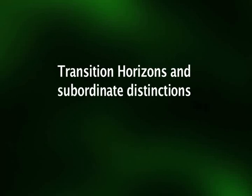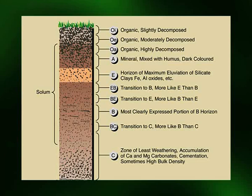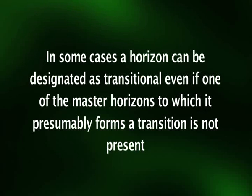Generally two kinds of transitional horizons are recognized. In the first kind, the horizon is dominated by properties of one master horizon but has subordinate properties of another; these are represented by two capital letters, for example EB, BE, or BC. The first symbol indicates the dominant properties. For example, an AB horizon has characteristics of both an overlying A horizon and an underlying B horizon, but is more like the A horizon. In some cases a horizon can be designated as transitional even if one of the master horizons to which it forms a transition is not present; for example, a BC horizon may be recognized even if no underlying C horizon is present.